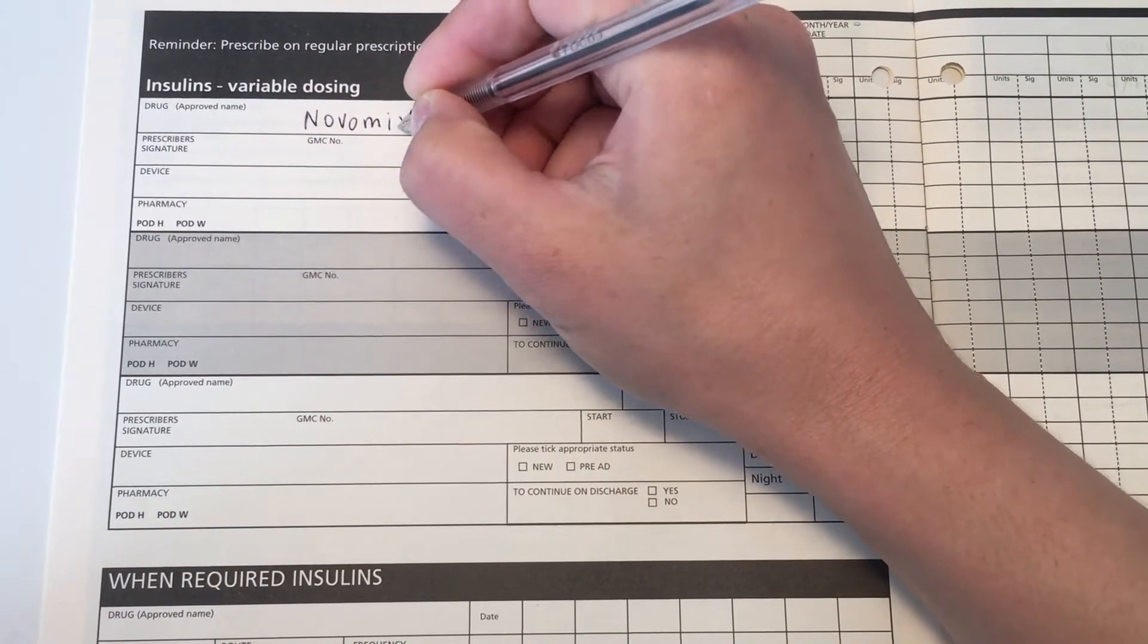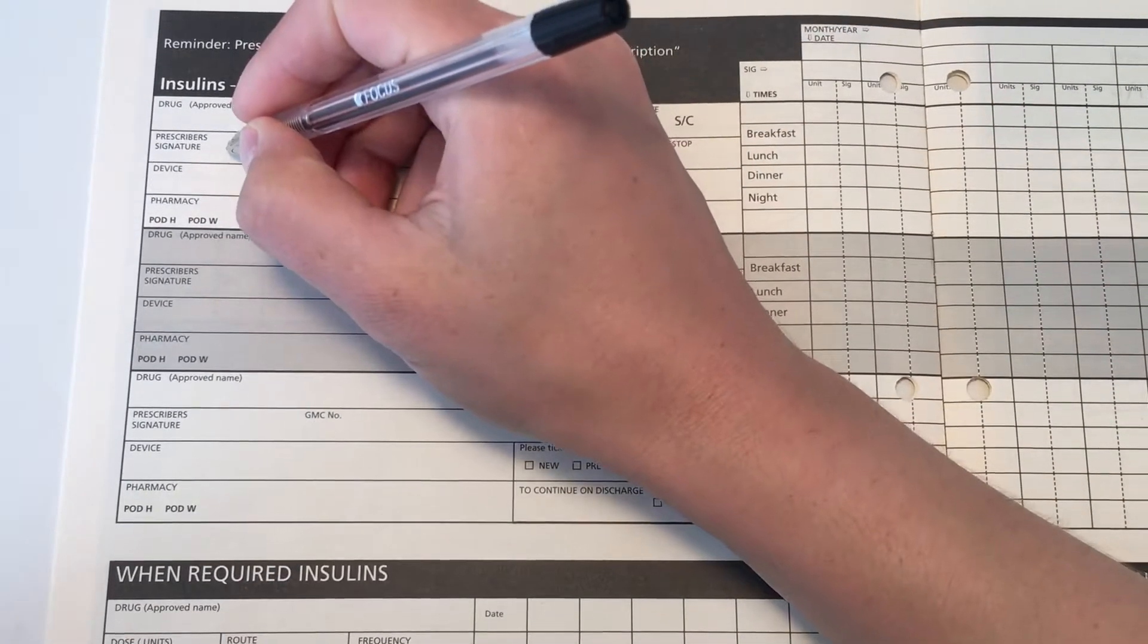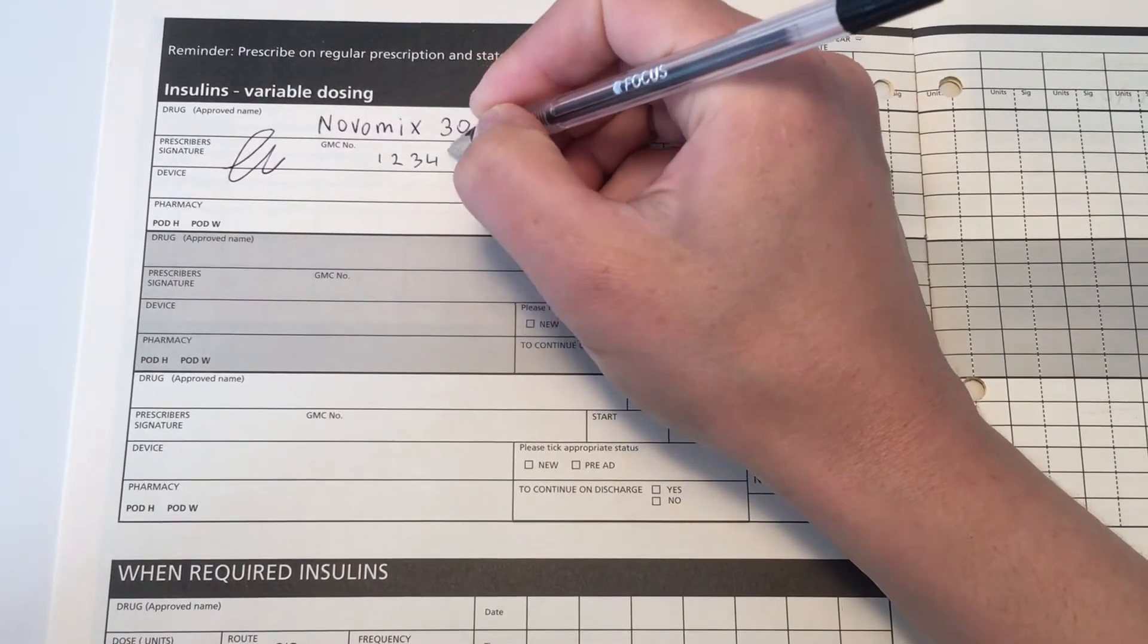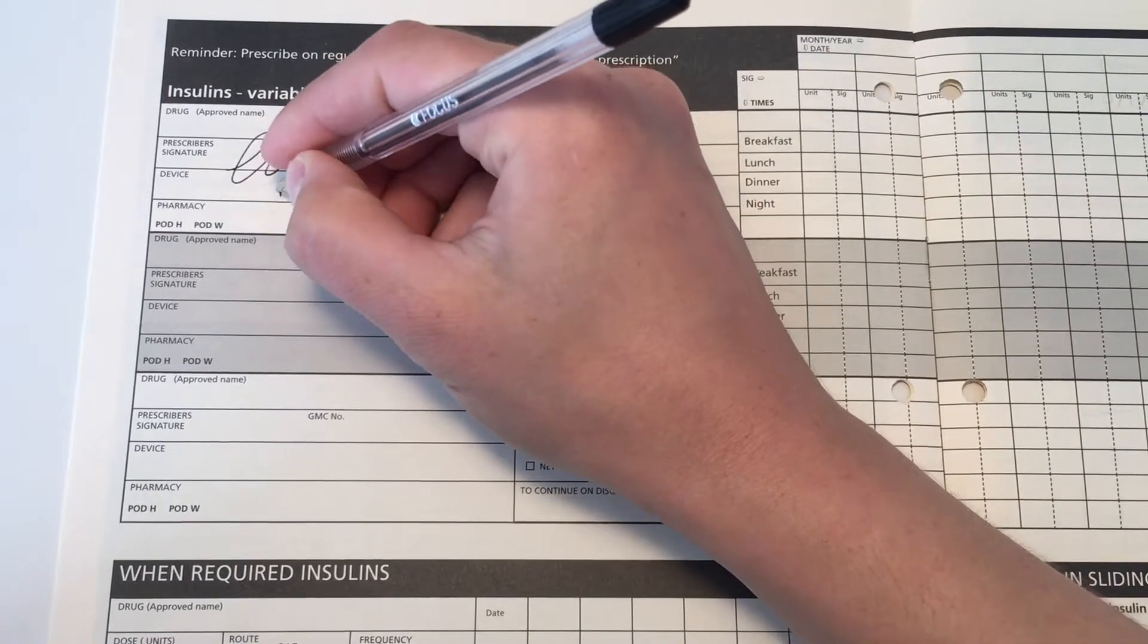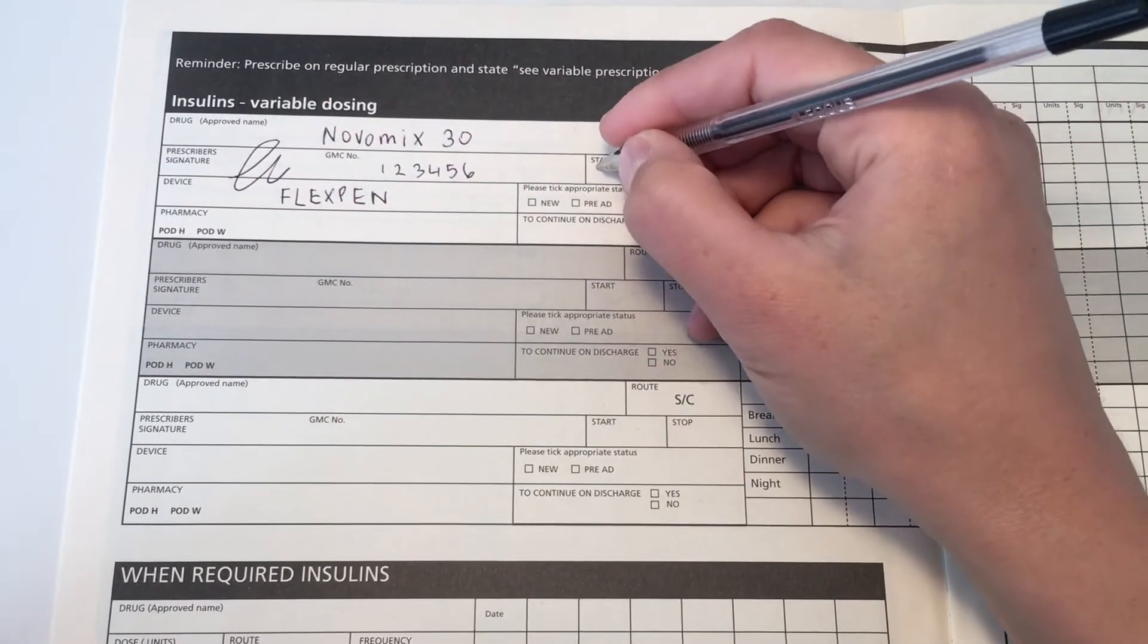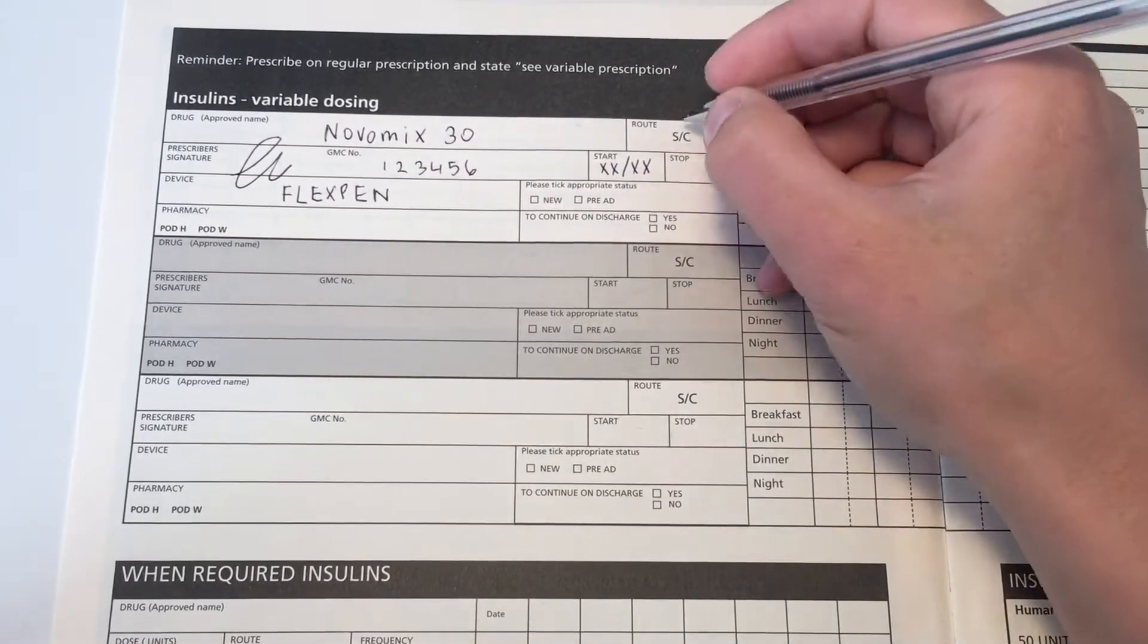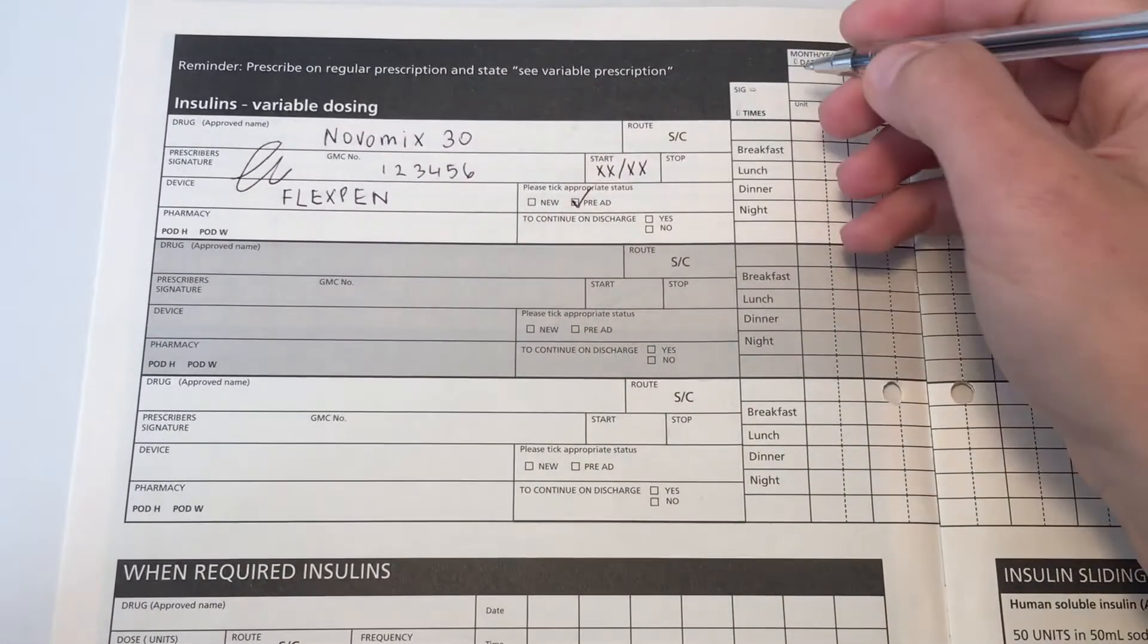So the first section we're going to fill in is the variable dosing and it's what the patient regularly takes. For example, here I'm going to write up some Novamix, and that is essentially a mixture of rapid acting and longer acting insulin used to treat diabetes. So this patient has come into hospital with this medication and you just have to prescribe it in this section. As you can see I sign and date it, and this won't change unless the diabetes nurse reviews the patient and decides to increase or decrease the dose.